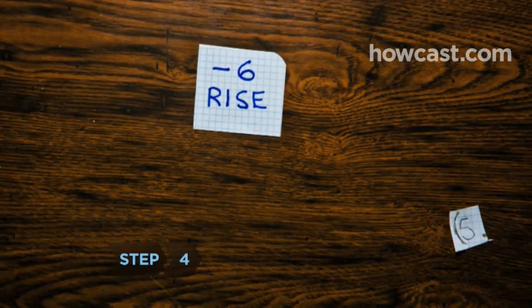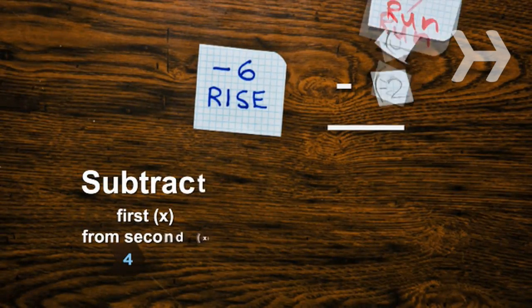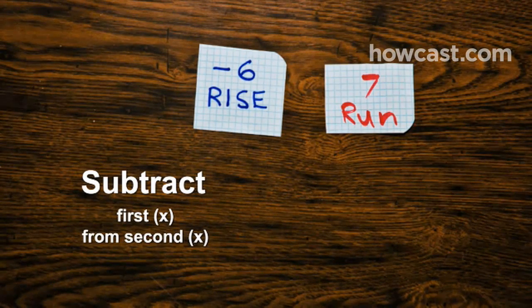Step 4. Subtract the X-axis location of the first point from the X-axis location of the second point. This difference is called the run.